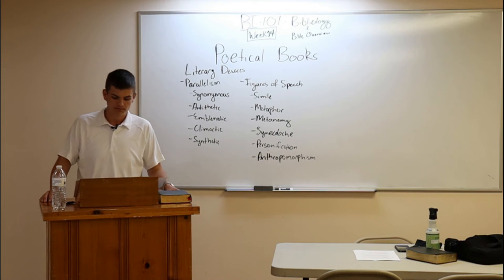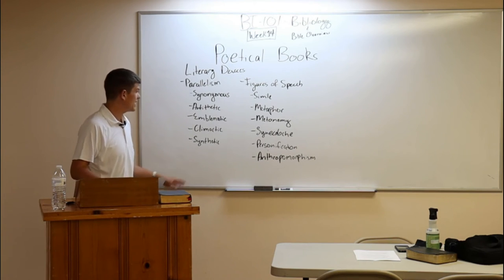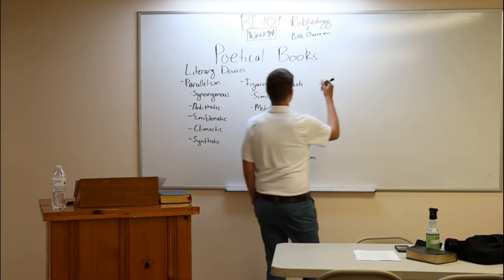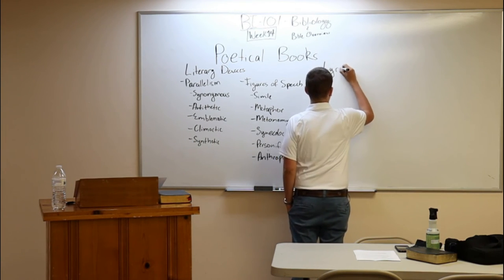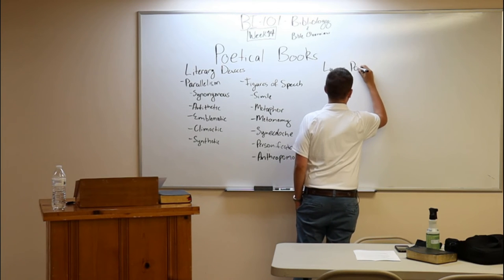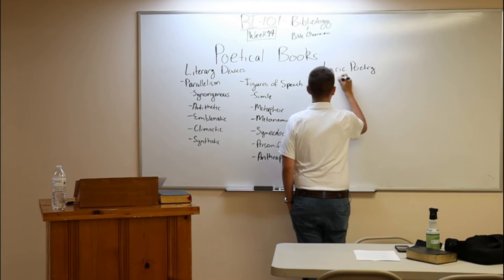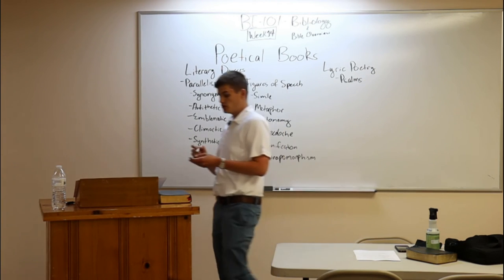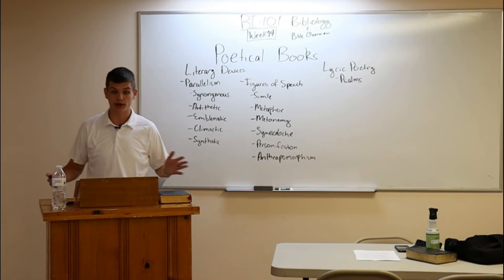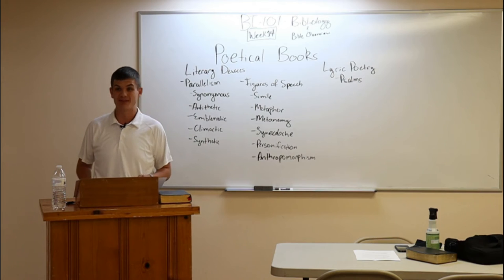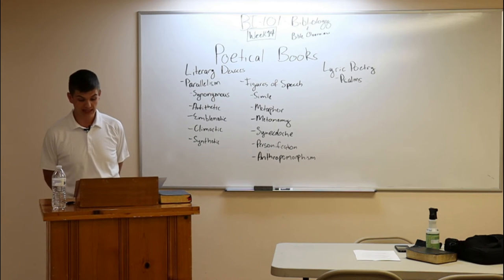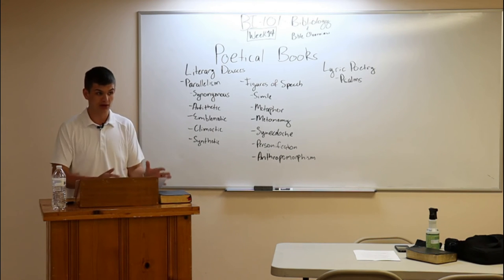We're going to divide the poetical books into three different categories of poetry. The first category is lyric poetry, which encompasses the book of Psalms. The book of Psalms is the longest book in the Bible, composed of 150 Psalms. Originally it was written as a five-volume piece, broken down into five different books because of its length — they were written on scrolls.